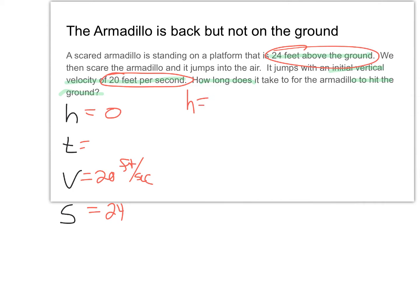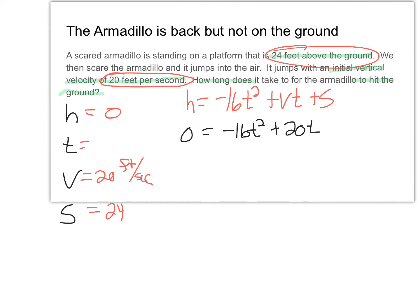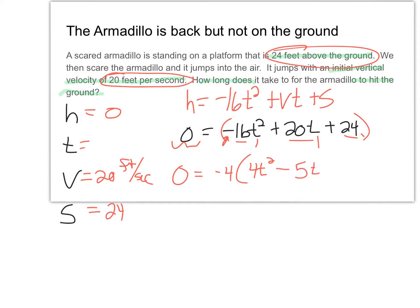Variables: H equals 0 (ending on the ground), T is unknown, V equals 20 feet per second, S equals 24 feet. Formula: 0 equals negative 16 T-squared plus 20T plus 24. One side equals zero so we factor. GCF: take out negative 4, since 16, 20, and 24 all share a factor of 4. We can't take out T's because the constant has none. This gives: negative 4 times (4T-squared minus 5T minus 6).